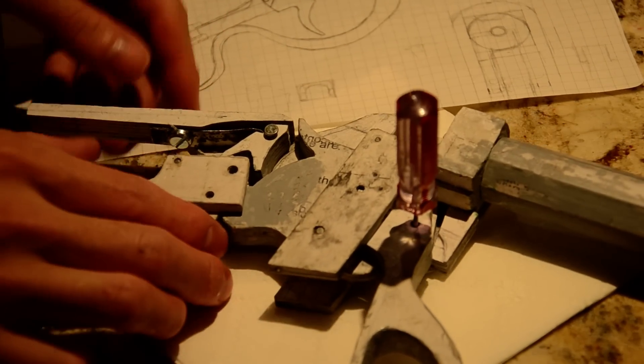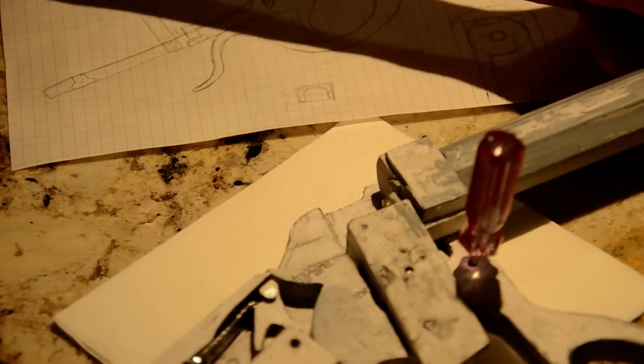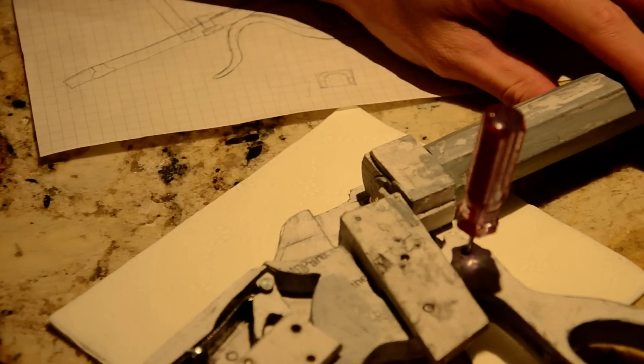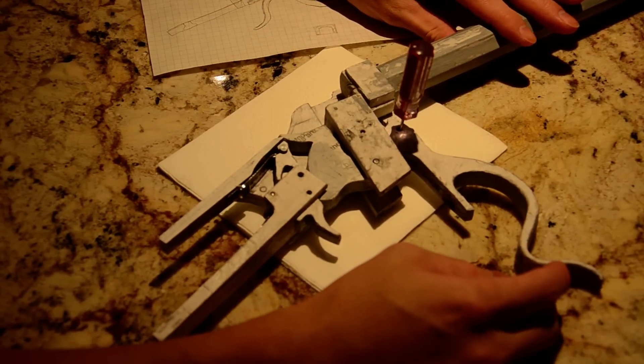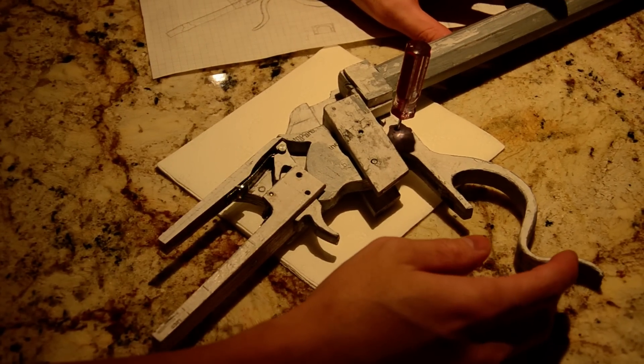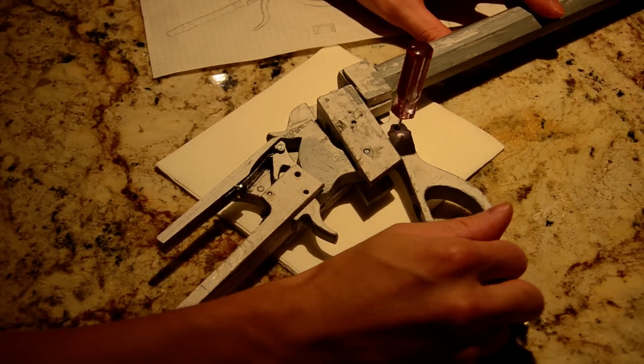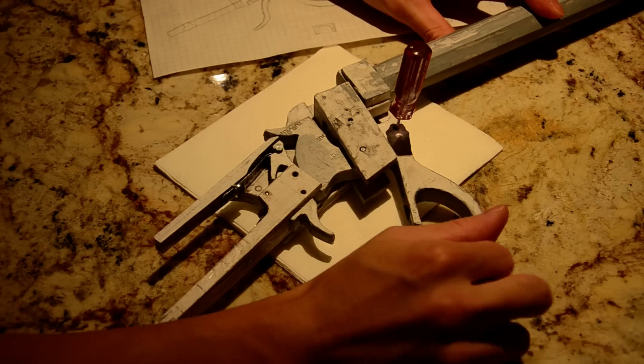The breech and the extractor. The extractor is also actuated when you open the breech block all the way. And so it brings the cartridge out as you can see.